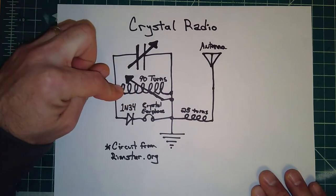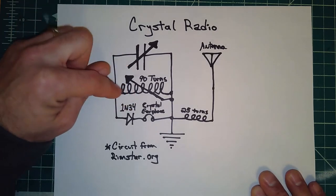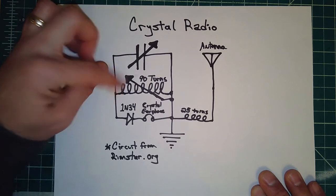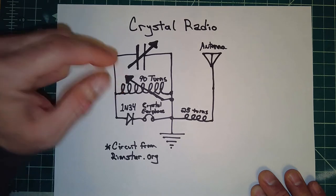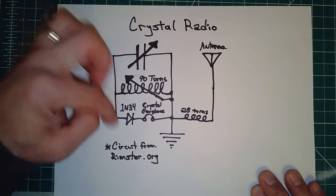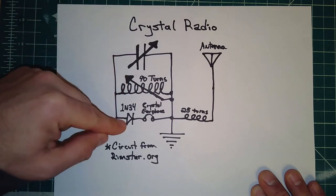We have a variable coil, which we will wind using 30 gauge, roughly 30 gauge enamel wire, wound around a toilet paper size diameter core. We're going to have a germanium diode, a 1N34.